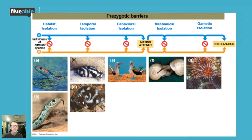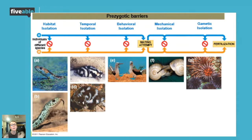The next two pre-zygotic barriers still happen before egg and sperm come together, but these organisms would actually attempt to mate. Mechanical isolation — shown with two snails — basically means the parts don't fit. These animals cannot mate because their reproductive organs don't fit together. Specifically, these two snails have shells that go in opposite directions — one clockwise, one counterclockwise — so they can't match up. Finally, gametic isolation means the egg and sperm aren't capable of fusing together, even if they get in proximity of one another. All of these are pre-zygotic barriers.